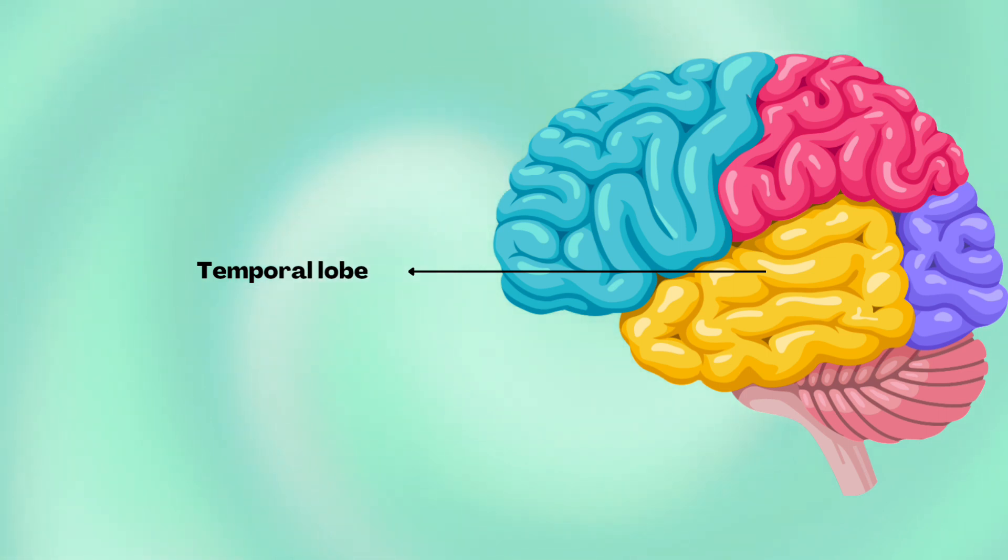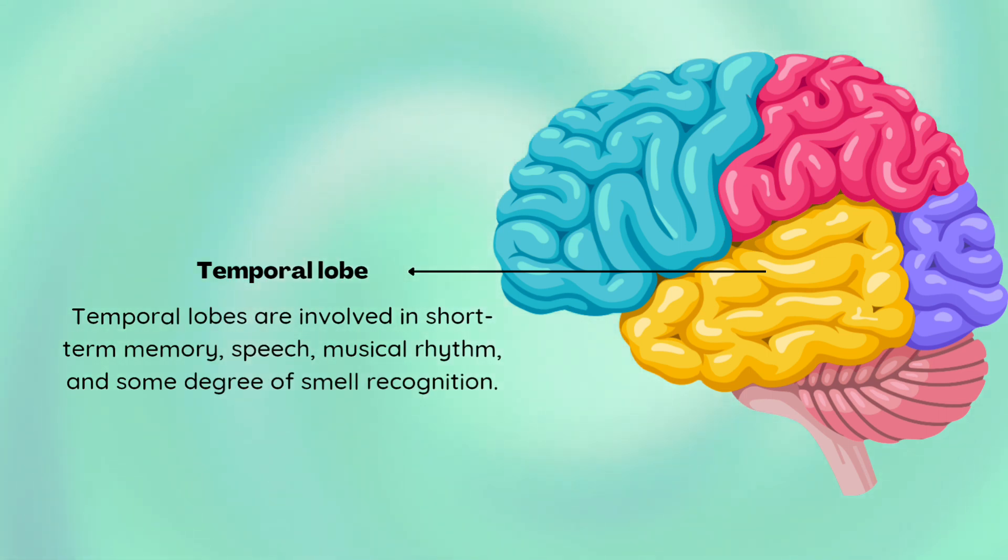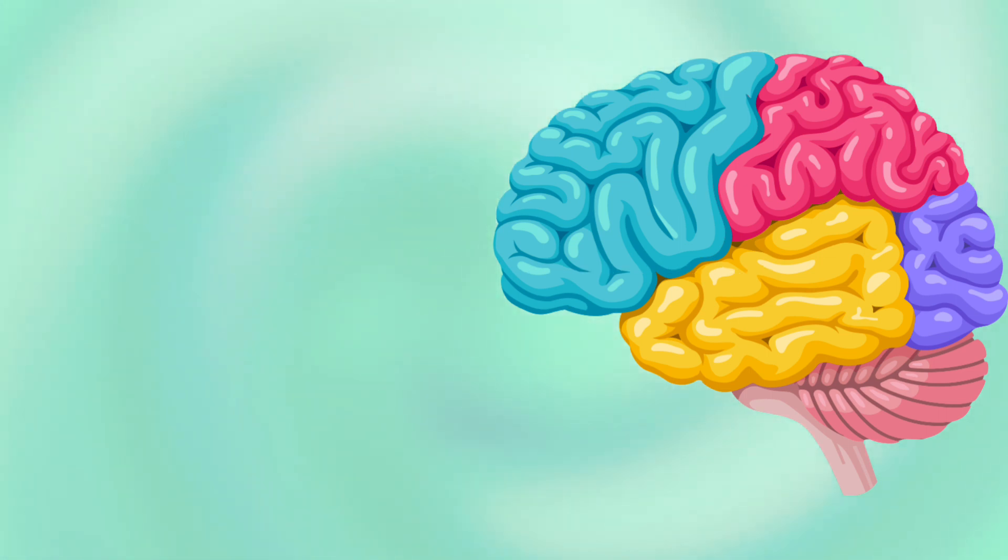Temporal lobes - they're involved in short-term memory, speech, musical rhythm, and some degree of smell recognition.